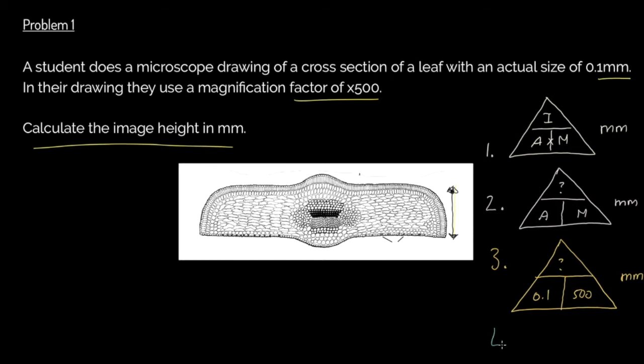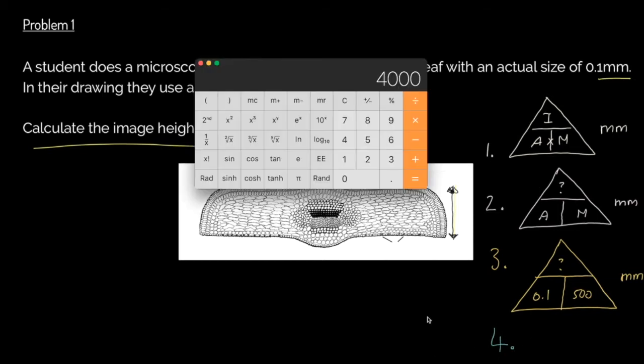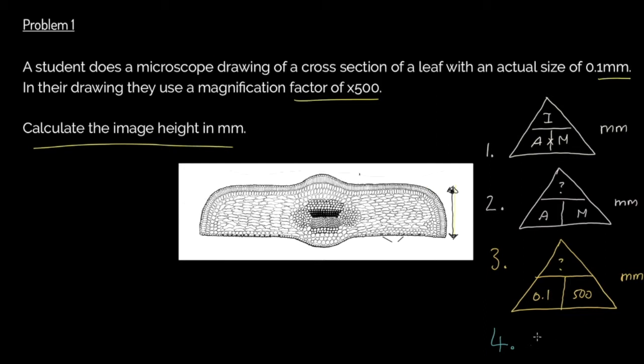So finally, how are we going to do this? Stage four, we're going to calculate. We're literally going to say 0.1 multiplied by 500 equals 50. So what we have here is we have an image size of 50. Must keep my units consistent, millimeters.